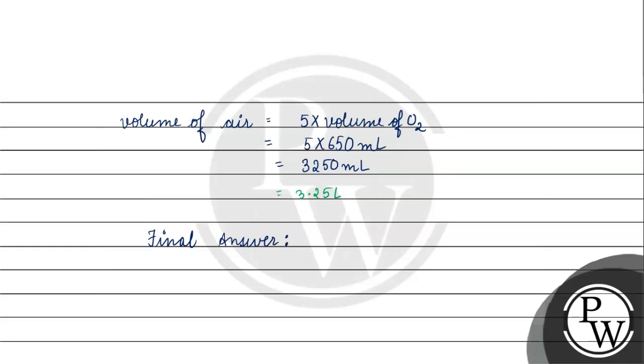So the final answer for this question is 3.25 liter of air will be required for combustion of 100 ml of butane. I hope you understood it well, thank you and all the best.